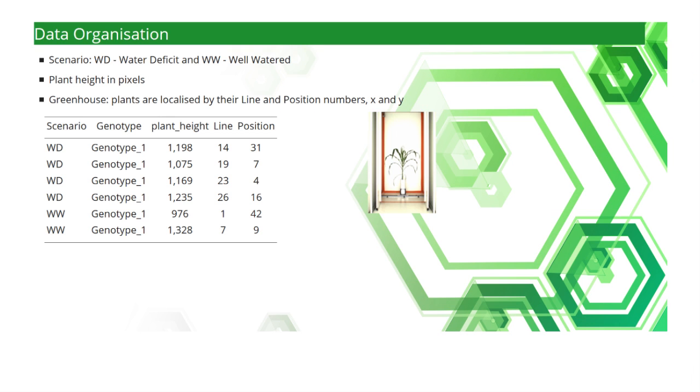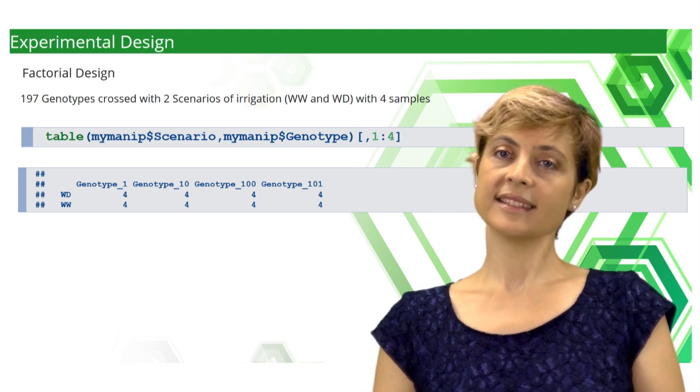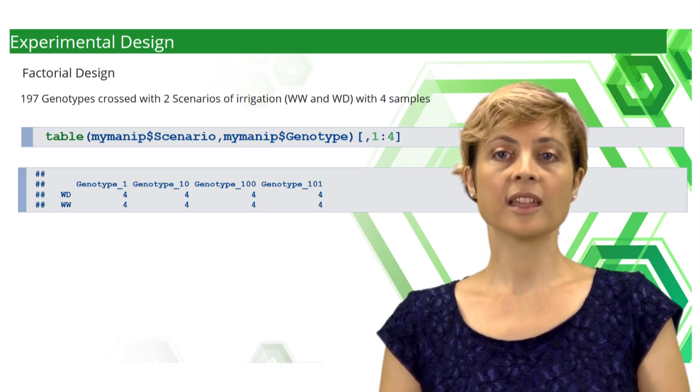Experiments were undertaken to study the response of different genotypes of wheat to drought. The experiments covered two factors. First, the anonymized genotype and then the scenario of irrigation with two cases: WD for water deficit and WW for well-watered plants. The phenotype of interest is the plant height extracted from the digitalized image of each plant taken in March 2012. The localization of the plant in the greenhouse is also given. This is a factorial design with equal sample size.